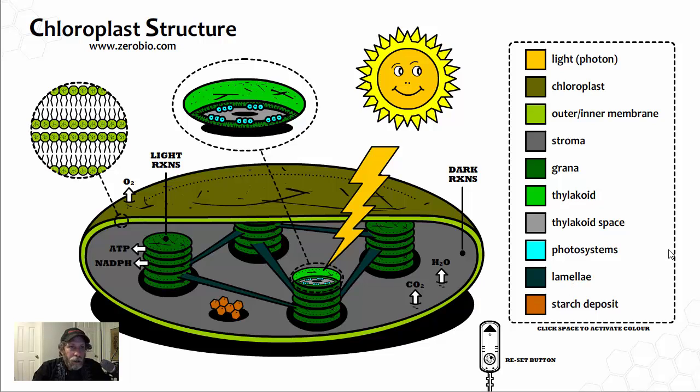And I'm just focusing on starch, so there's a starch deposit sitting in the stroma after photosynthesis has been completed. We've successfully made what we needed and we have successfully completed the tutorial as well.